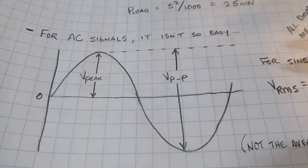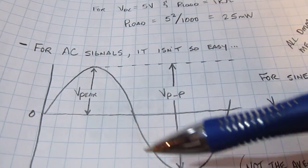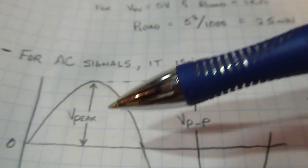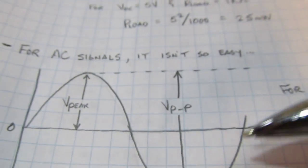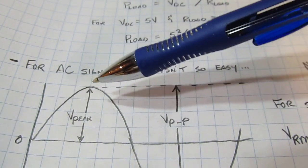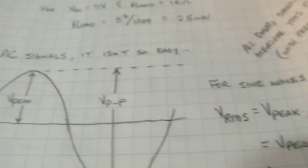But for AC signals that are balanced around zero and look like this, the calculation isn't so easy because the voltage isn't constant. It's continually changing. So we'd really have to calculate power incrementally all the way through this waveform.